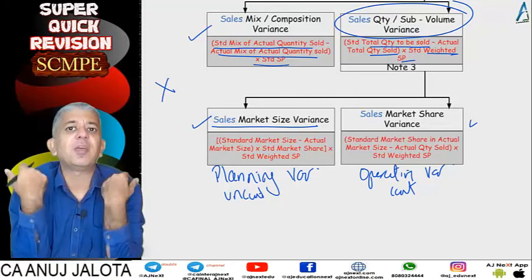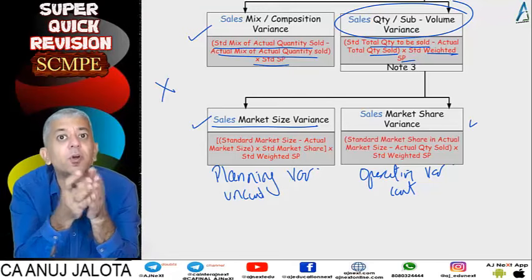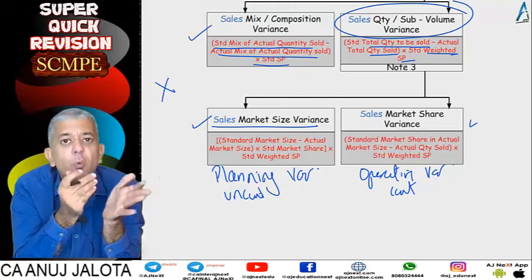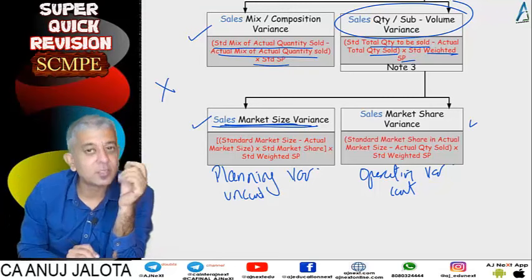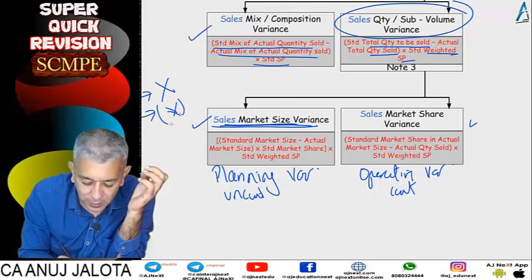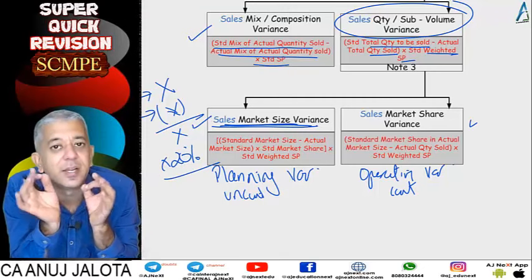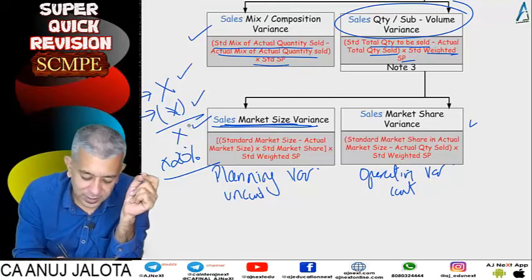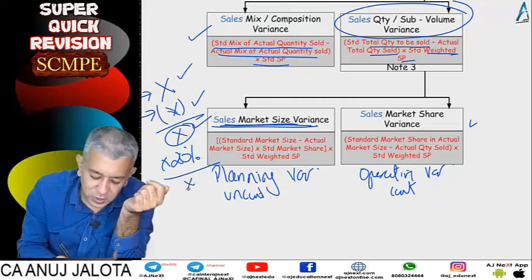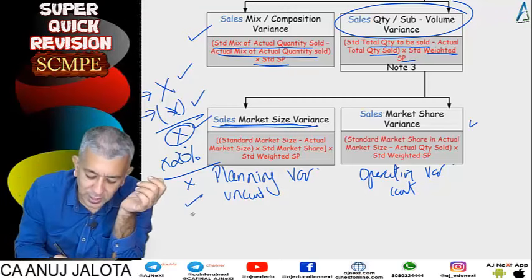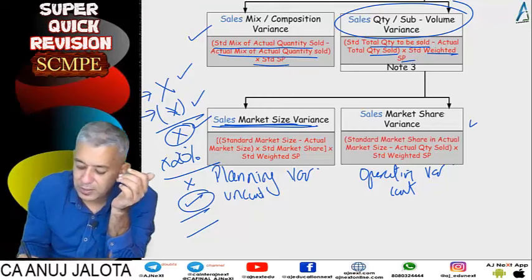When any variance has both a controllable and an uncontrollable part, it is very important to separate them — you can hold the manager responsible for the controllable part but not the uncontrollable. For Market Size Variance: take the difference between the standard market size and the actual market size, multiply by your standard market share percentage, to find the units gained or lost due to the market size change, then multiply by the Standard Weighted Average Selling Price.